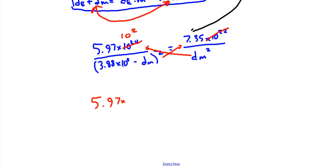We end up with 5.97 times 10 to the second times d_m squared is equal to this whole thing right here: 3.88 times 10 to the eighth minus d_m squared times 7.35. Now you'll just have to expand this and solve for d_m.